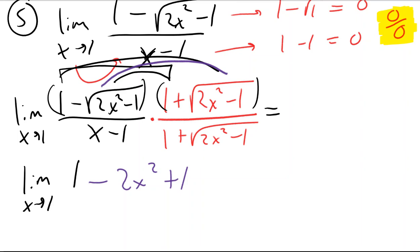Square root of 2x squared minus 1 times square root of 2x squared minus 1 would be 2x squared minus 1. But positive times negative means the whole thing is negative. So either put parentheses or just distribute. It's not minus 1, it's plus 1.